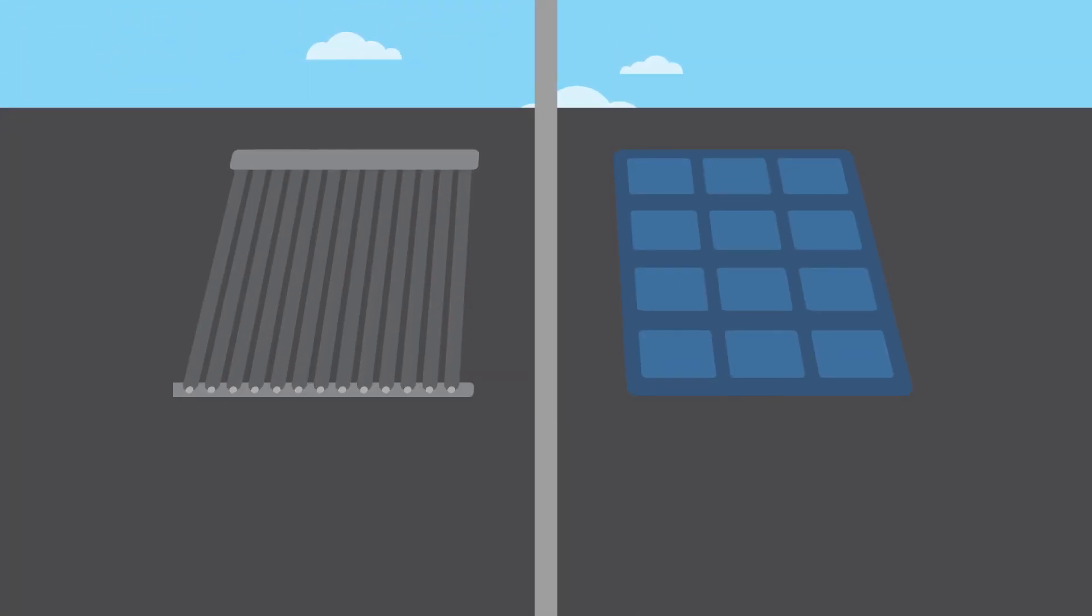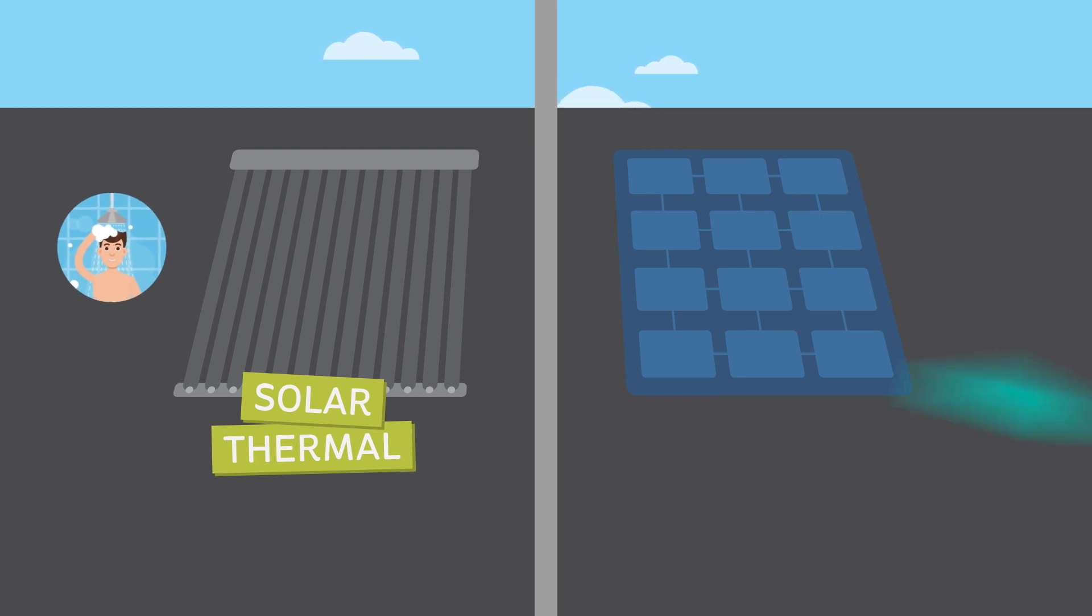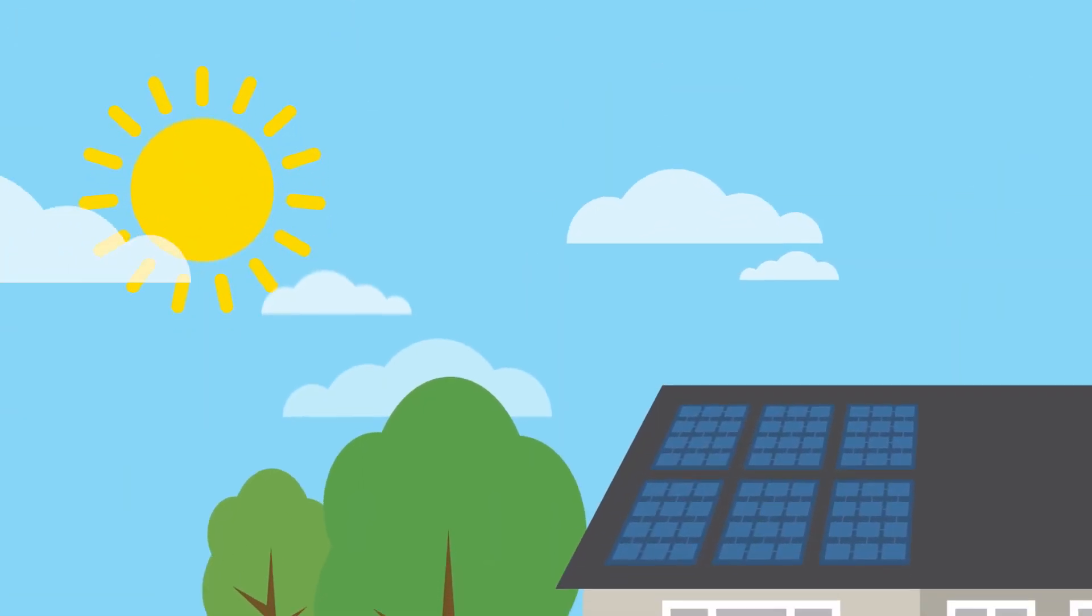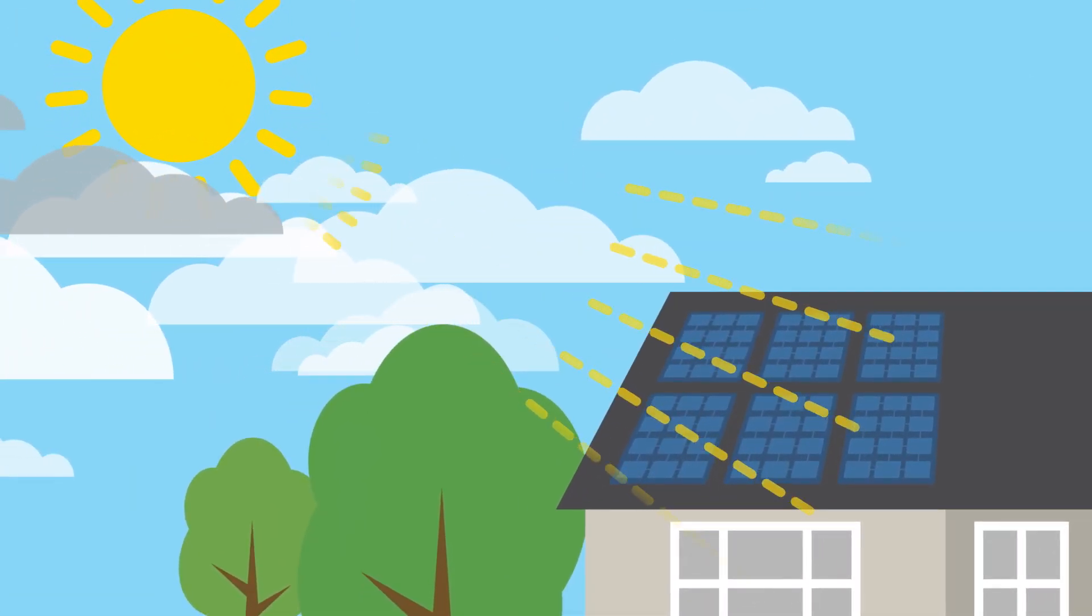There are two types of solar panel: solar thermal, which is only used to heat water, and solar photovoltaic, which is used to generate electricity and heat water. Here we focus on solar photovoltaic, more widely known as solar PV.